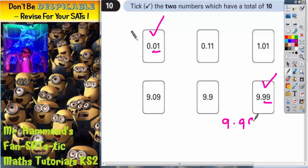So 9.99 add 0.01. Quick check. 1 plus 9 is 10, put your 0 in, carry your 1. 0 plus 9 is 9, plus that 1 is 10.